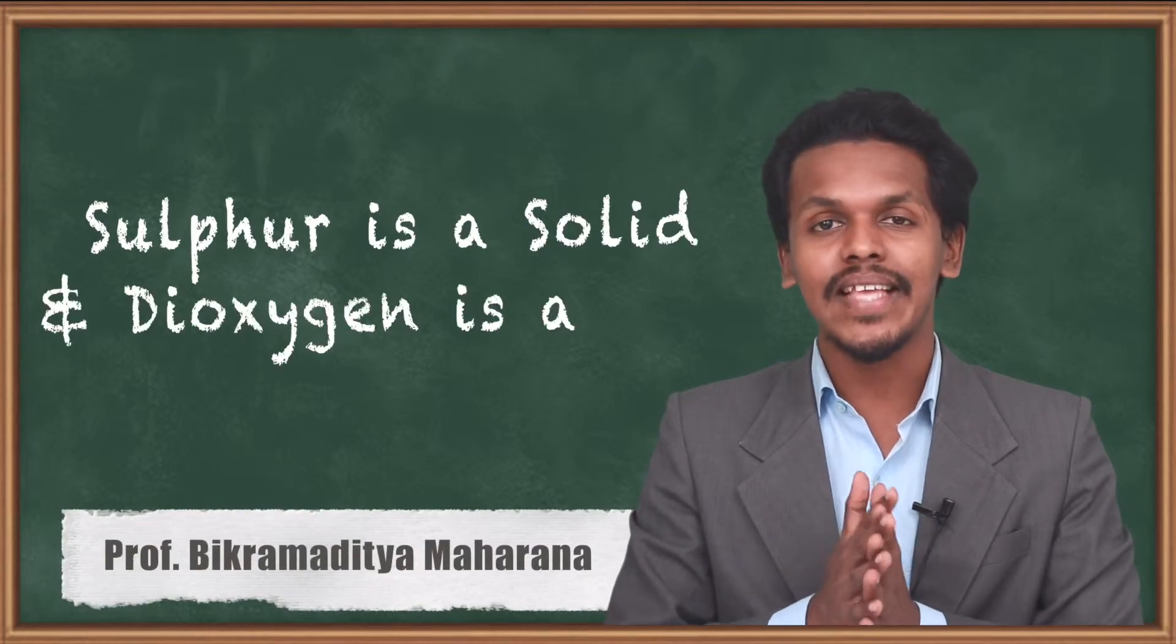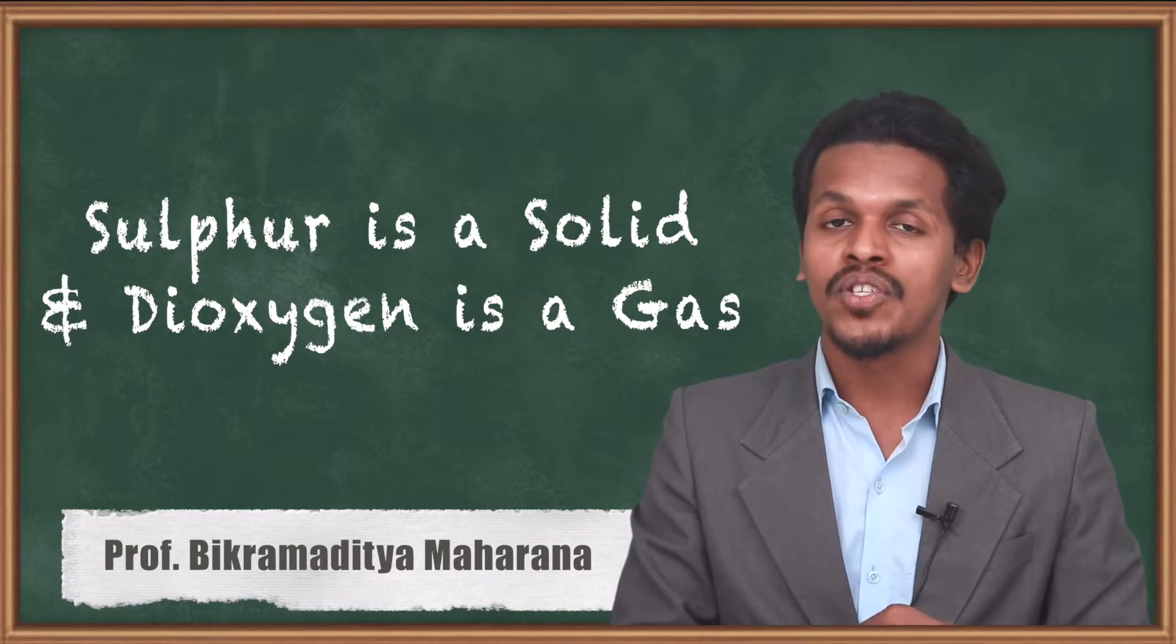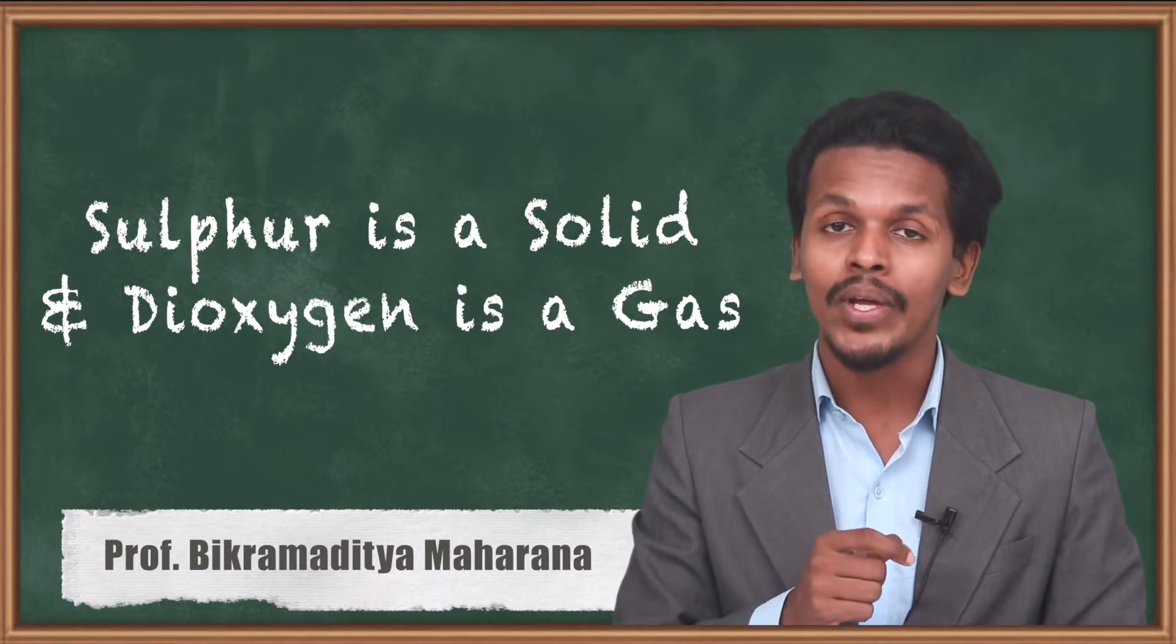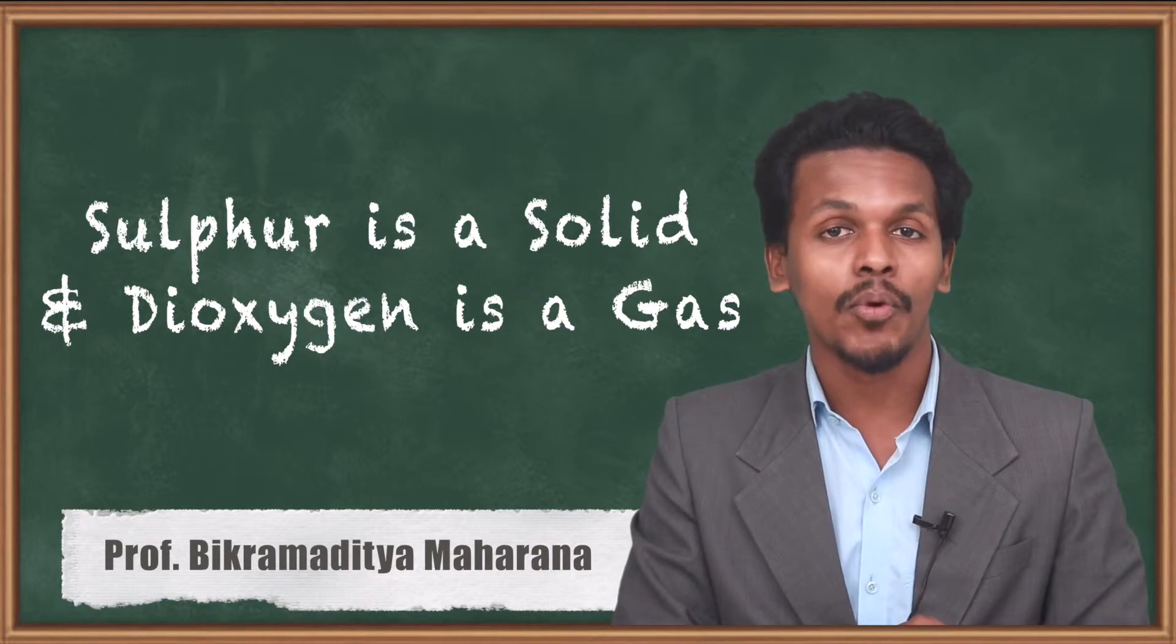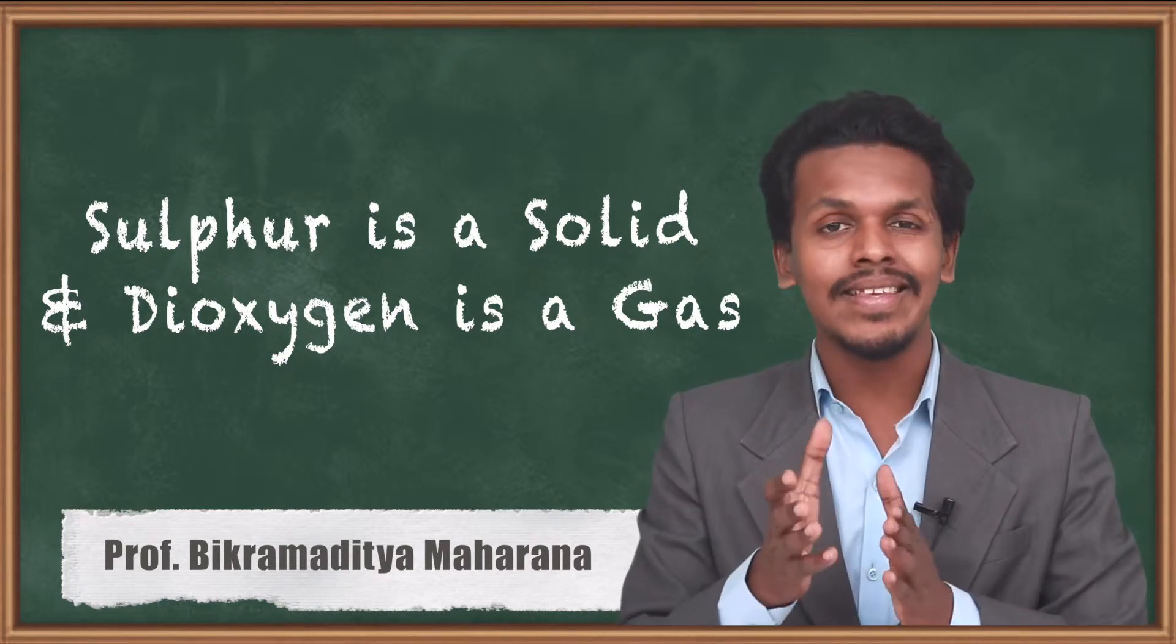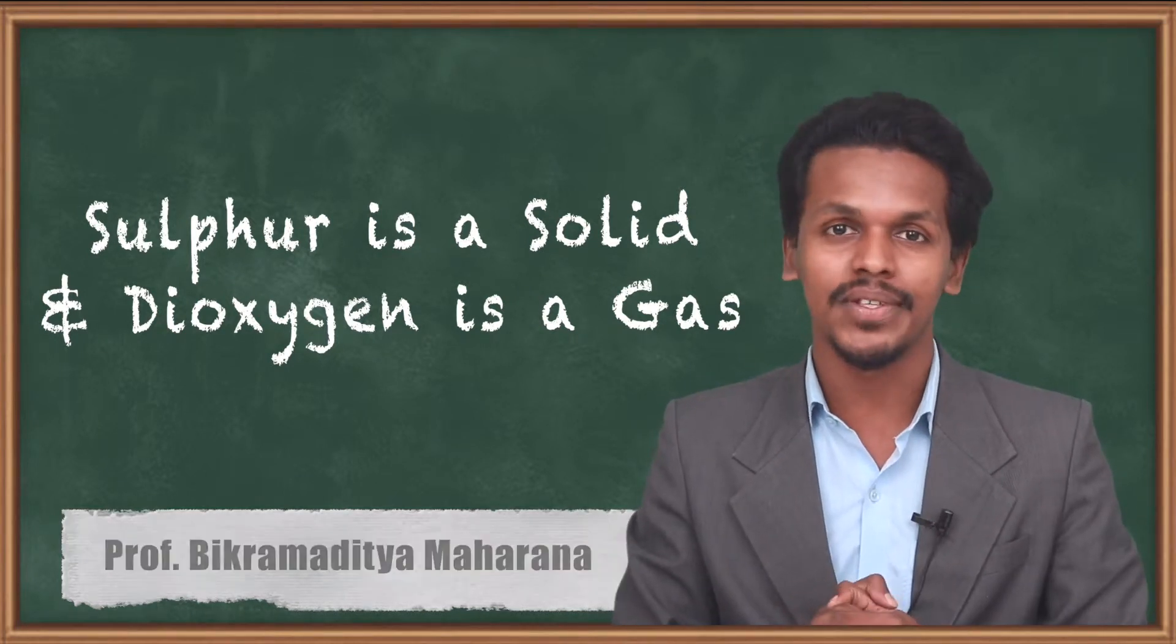Hey friends, in the previous lecture we discussed the physical trends in Group 16 elements, including their physical states. We learned that oxygen is a gaseous molecule while sulfur is a solid molecule. So why is there this difference? This is what I'm going to talk about in this topic.